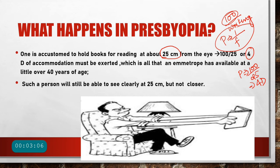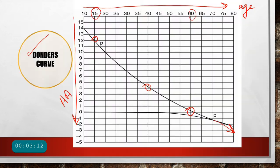This 4 diopters is present in an emmetrope all the time. However, if the person reaches 40 years of age, the Donders curve shows that roughly 4 diopters of accommodation remains — just enough to look at 25 centimeters. But as the person crosses 40 and becomes 45 or 50 years old, the available amplitude becomes only 3, or 2, or 1, or 0 diopters.